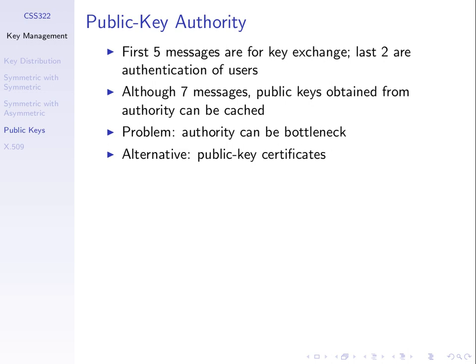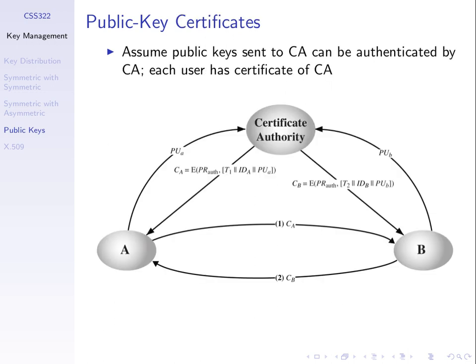An alternative is to use public key certificates. We'll go through a scheme for how to use certificates and then describe the formal parts of what a certificate means. Here's a different approach with two users A and B who want to communicate, and an authority — here called a certificate authority. We use this concept of calling what we exchange a 'certificate.'